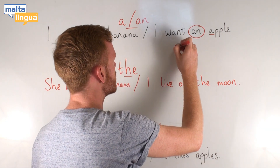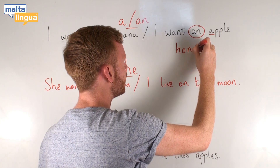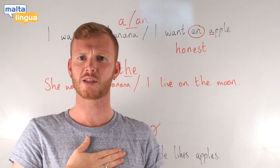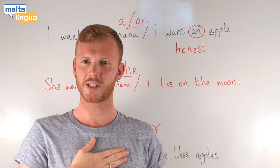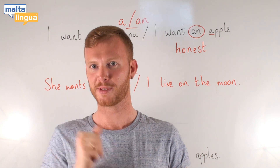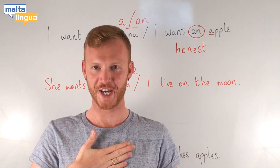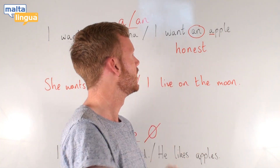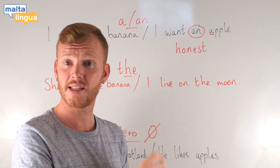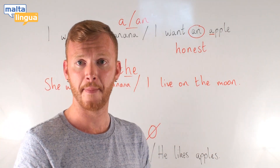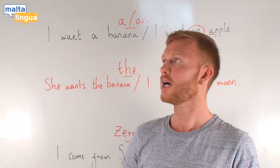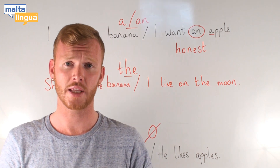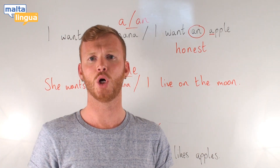For example, with the word 'honest'. I am an honest person — I do not tell lies. We do not pronounce the H; it is silent. So in this example we say 'I am an honest person' because the sound at the beginning of 'honest' is a vowel O sound.